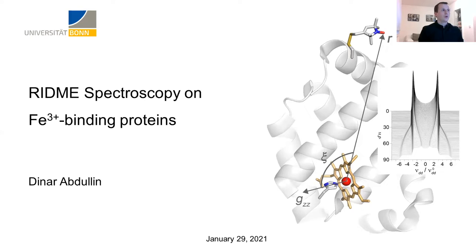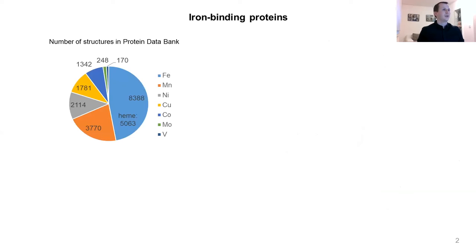My talk will focus on iron-binding proteins. An iron ion is a common cofactor in many proteins. According to the Protein Data Bank, almost 50% of all solved structures that contain transition metal ions correspond to iron-binding proteins. More importantly, iron-binding proteins are involved in many essential processes. For example, myoglobin and hemoglobin allow to store and transport oxygen. A large family of cytochromes P450 perform catalysis, and the molecular iron can be stored in our bodies by means of proteins like transferrin and ferritin.